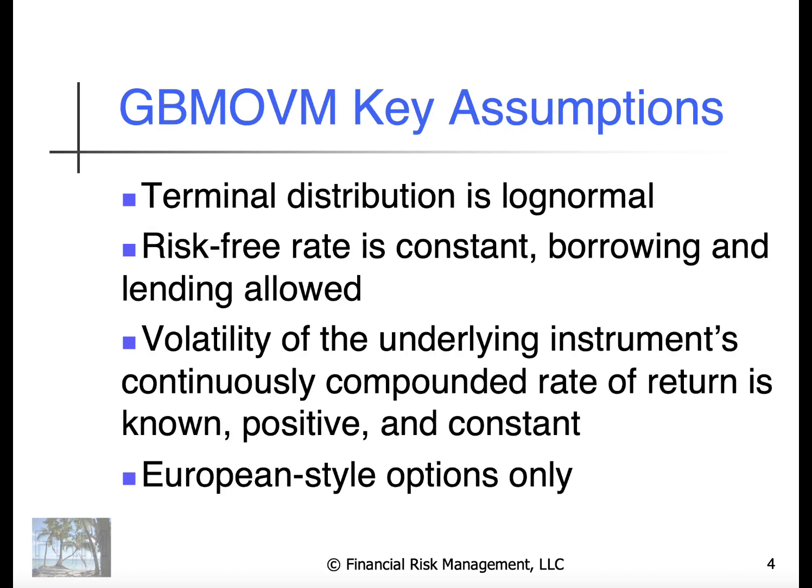We'll look at some key assumptions and some graphical illustrations. The key foundational assumption is the terminal distribution is log normal. We assume the risk-free interest rate is constant with borrowing and lending allowed at that rate. Volatility — the underlying instrument's continuously compounded rate of return — is known, positive, and constant. And we're going to be looking at European style options only. These continuous time models cannot handle American style options with any kind of simplicity, so the binomial model remains attractive for American style options even with the existence of these much faster closed-form solutions.